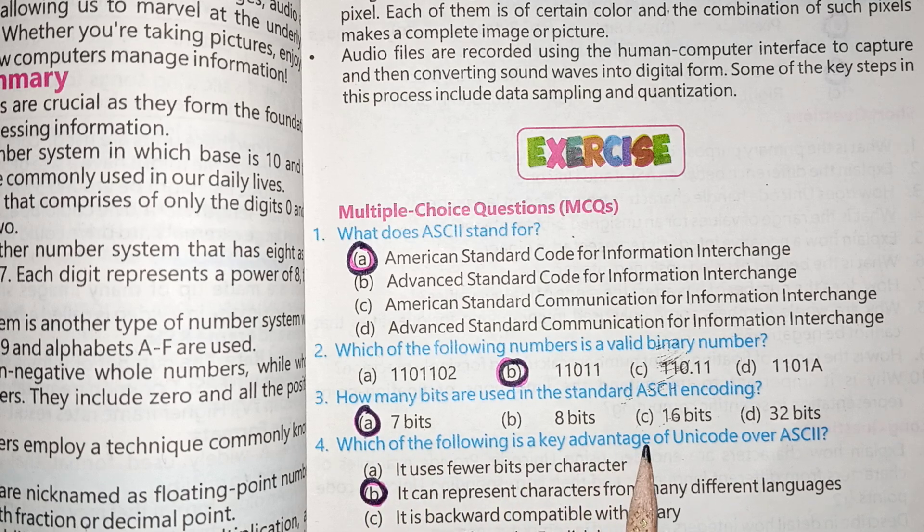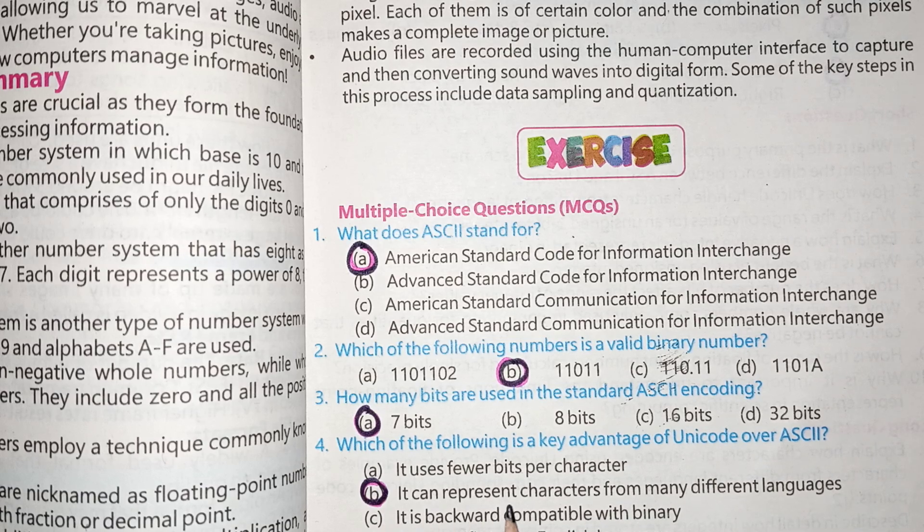Which of the following is a key advantage of Unicode over ASCII? B is the correct option, it can represent characters from many different languages.